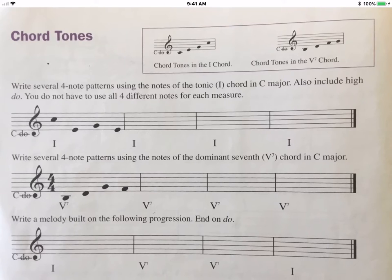Chord tones, page 22. In this exercise we're going to compose using only chord tones. Chord tones are the members of a chord. In a I chord it would be DO MI SO. In a V7 chord it would be TI RE FA SO.